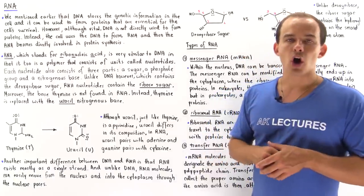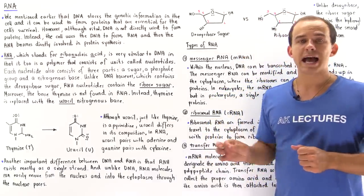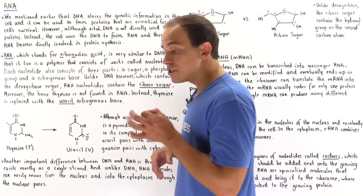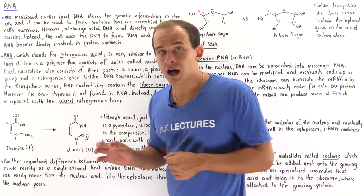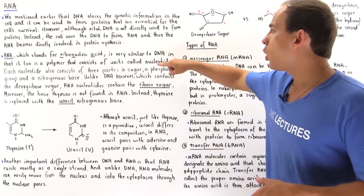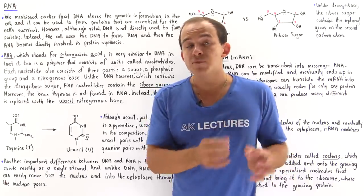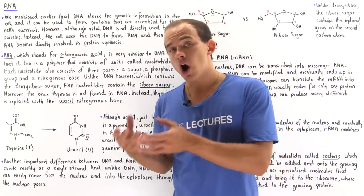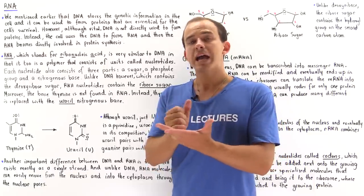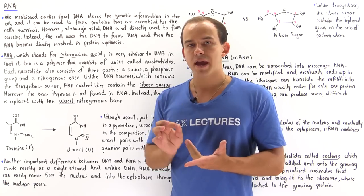What exactly is RNA? RNA stands for ribonucleic acid, and RNA is very similar to DNA in that it is also a polymer that consists of individual units known as nucleotides. Just like in DNA, our nucleotides in RNA also consist of three important parts: a sugar, a phosphate group, and a nitrogenous base.